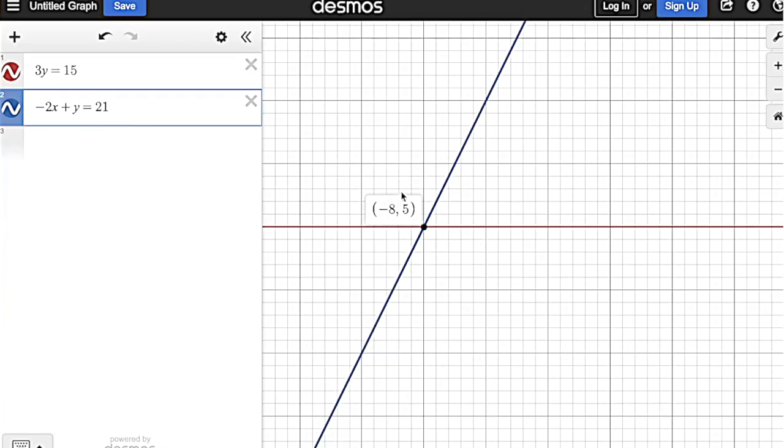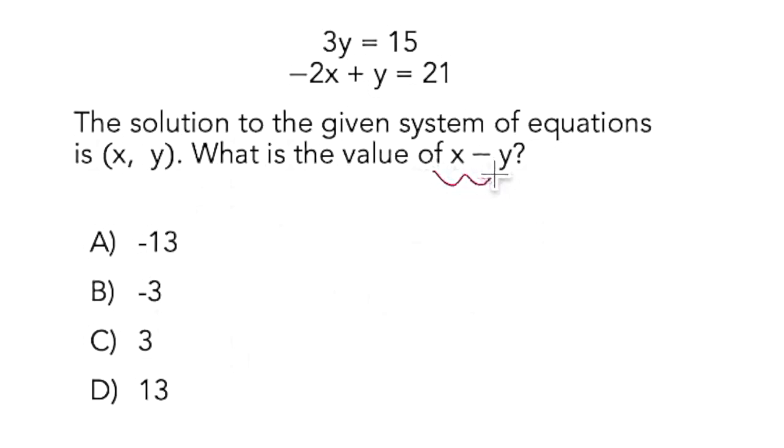So I'm going to write for myself negative 8 comma 5 on my scratch paper. Come back and do that last tiny little bit of math there, which is our x value minus our y value. Negative 8 minus 5 is negative 13. There you go. Easy as pie.